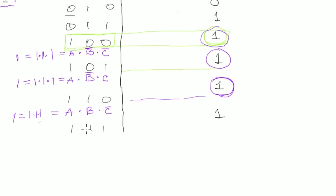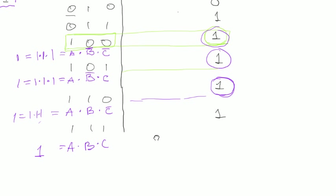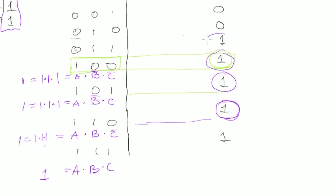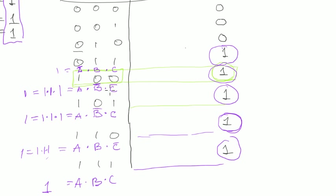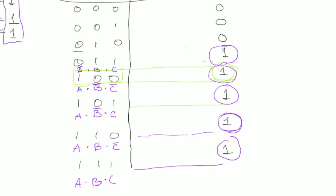For the last row with all ones, we just write a multiplied by b multiplied by c — it equals 1 when all of them are 1. And we also missed another row: we have a-negated multiplied by b multiplied by c, because we don't want zero there. So now we have five small product functions, and we've solved the problem for all five rows that output 1.